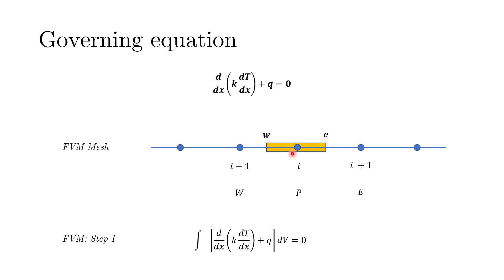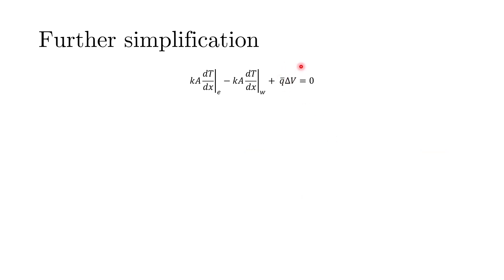What happens after we do that is that we get Ka dT over dx evaluated at the east face minus Ka dT over dx evaluated at the west face plus Q bar into delta V. What I have done is I have assumed that the Q remains constant over this particular control volume or you can think of Q bar as the average heat source or the average heat sink on this control volume multiplied by the delta V that is the volume of that control volume. We have already looked at how to tackle these terms.